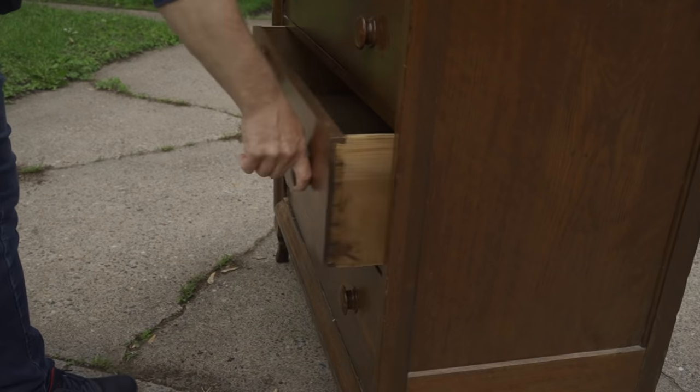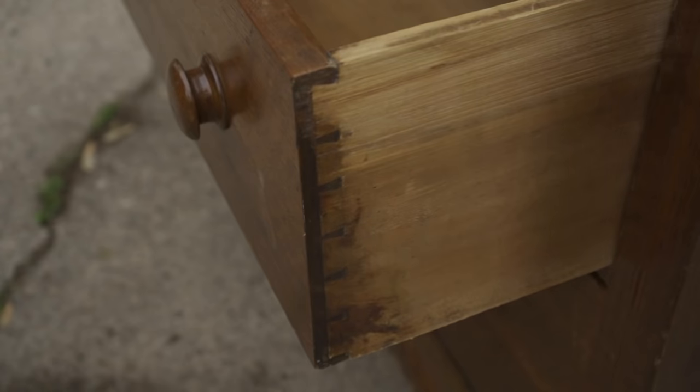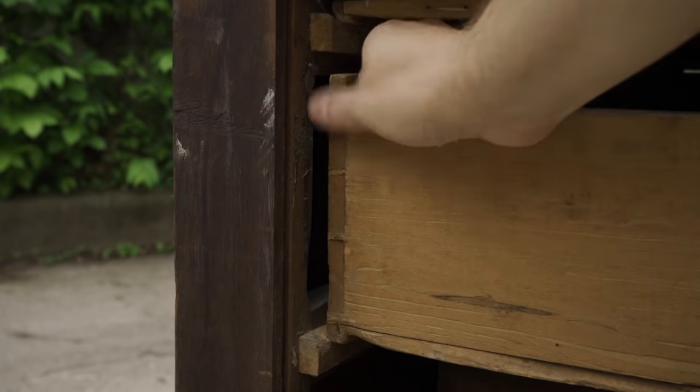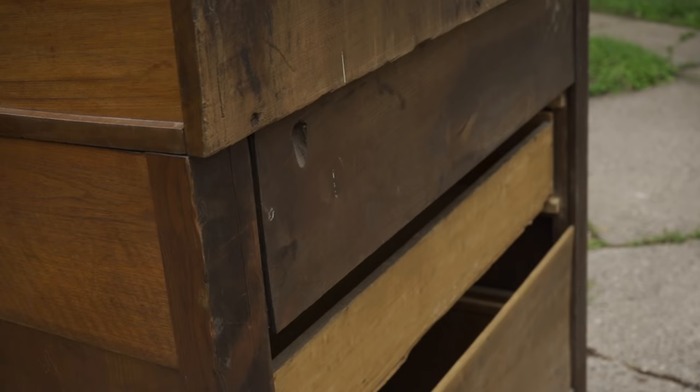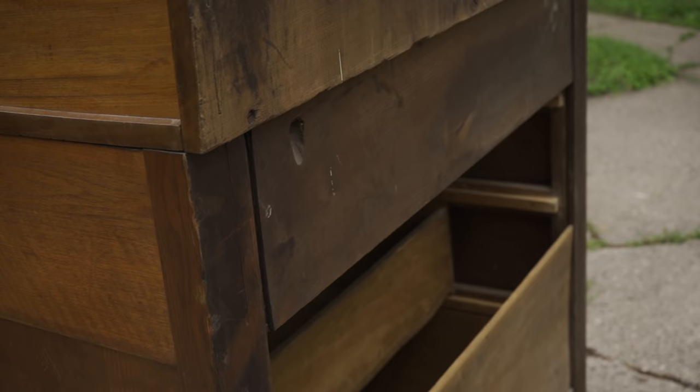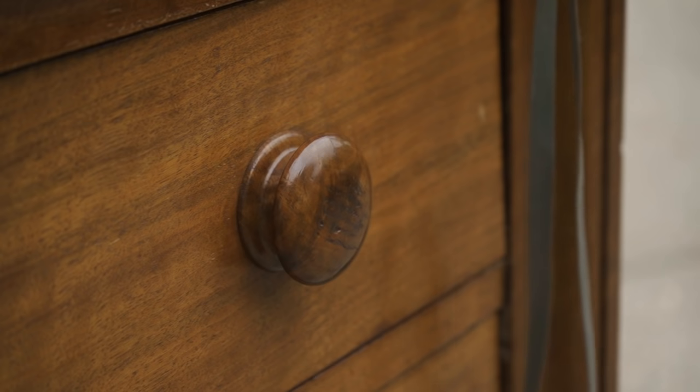It also looks to be handmade. Here you can see the hand-cut dovetails on the drawers. Even this back panel here is solid walnut. The panel that was underneath it is missing. And then the panel below that is not walnut. I'm not sure what that is. I love these bulbous drawer pulls that it has.